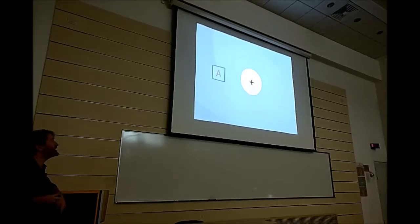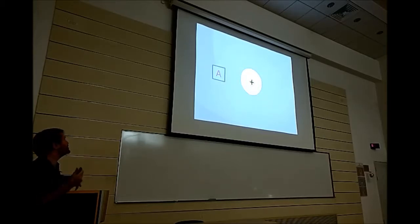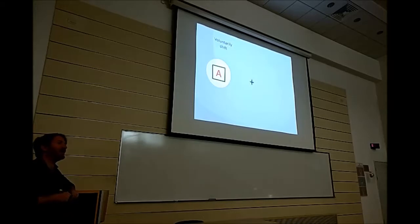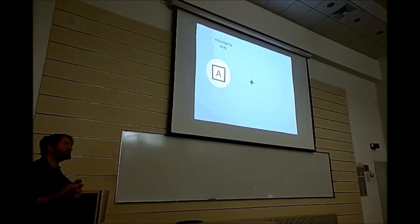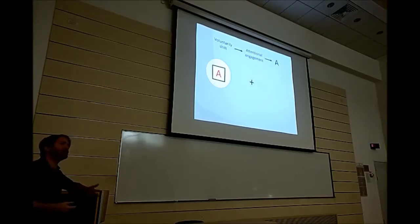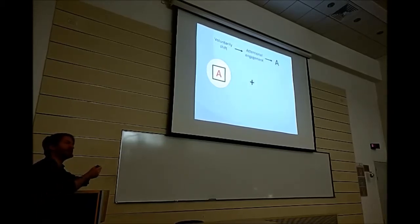Usually we can voluntarily shift our attention. For example, if we're searching for a red letter, once we detect the letter, we can voluntarily shift our attention towards that letter. Now once we shift our attention, a second process commences called attentional engagement. Attentional engagement has been described by various authors doing different things, and Riesman would have said that intelligent engagement is what binds the features together.